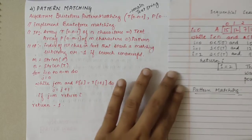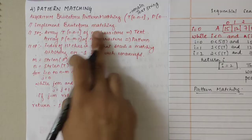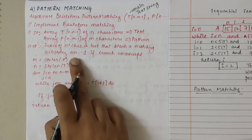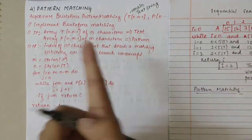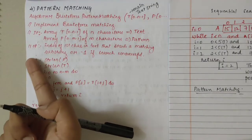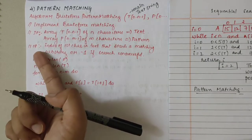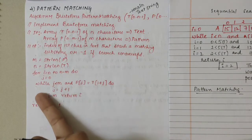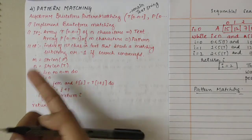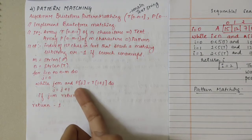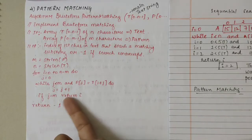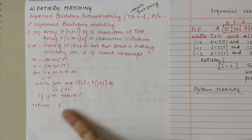Let's look into the algorithm for implementing brute force matching. The input is the text and pattern strings we have defined. The output is the index of the first character in the text where the matching pattern is found; if not found, we return minus 1. The algorithm iterates with a while loop checking j less than m and P[j] equals T[i+j]; if satisfied, j is incremented. If j equals m, return i; else if this fails, return minus 1.